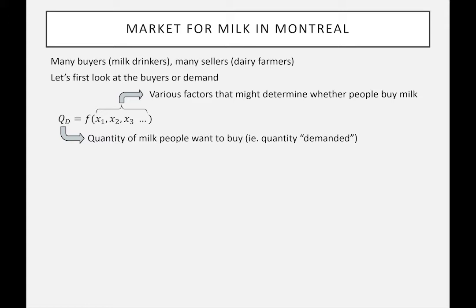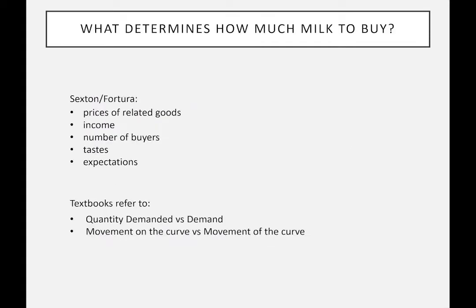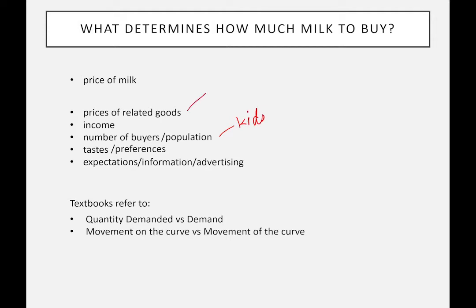These factors are various variables that influence a person's desire to drink milk. The textbook lists, for example, the prices of related goods, people's income, and critically, the price of milk itself. Other factors include income — how rich they are — the number of buyers, and the nature of the population, for example whether there are kids in the family. The price of related goods would be things like cereal, coffee, or juice. Note that we put in the price of those related items, not whether they consume them.